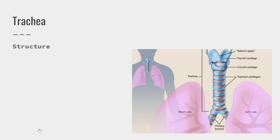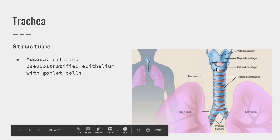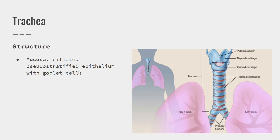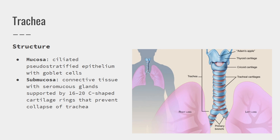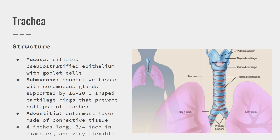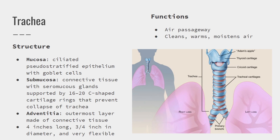Now let's move on to the trachea. The trachea is what people call the windpipe. It is this tube connecting our larynx to our bronchial tree. Just like the bottom part of the larynx, it has our respiratory mucosa. The trachea also has multiple layers: the mucosa is the innermost layer, surrounded by a submucosa of connective tissue and cartilage rings. The cartilage rings are really important because they hold the trachea open. Then there's an outer layer called the adventitia, made of connective tissue. The main function of the trachea is to provide an open airway for air. Because it has that tissue, it's also able to clean, warm, and moisten the air, similar to the nose and sinuses.